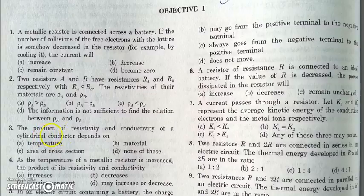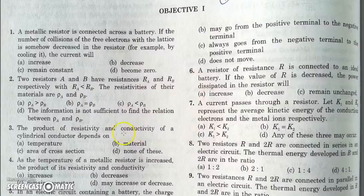The third question asks about the product of resistivity and conductivity of a cylindrical conductor. By definition, resistivity is the reciprocal of conductivity. So no matter what type of conductor it is — regardless of shape, size, or material — their product will always be 1. So it depends on nothing, and the answer should be D.